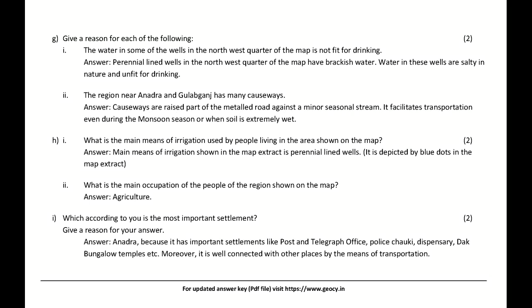Give a reason: The region near Anadra and Gulabganjay has many causeways. Answer: Causeways are raised parts of the metalled road against a minor seasonal stream. They facilitate transportation even during the monsoon season or when the soil is extremely wet.